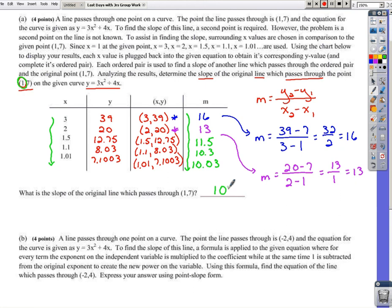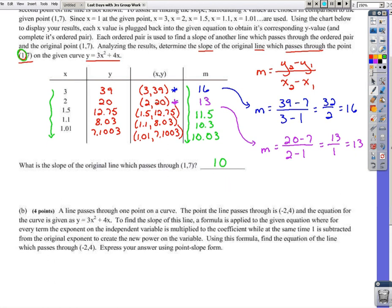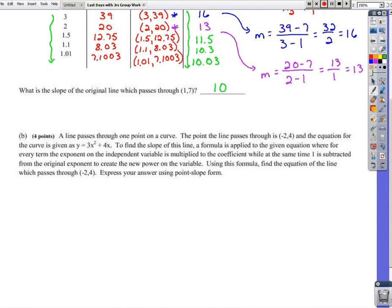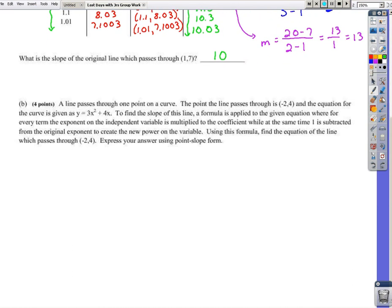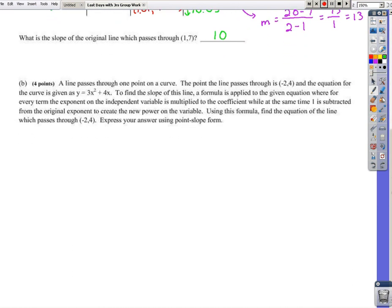Now let's go down to part B here. Part B starts to touch on actually easier ways to do a problem like part A. There are some connections that eventually would be made here in a calculus class. So in this one, if we read through it, a line passes through one point on a curve. The point the line passes through is negative 2, 4, and the equation for the curve is given as y equals 3x squared plus 4x.